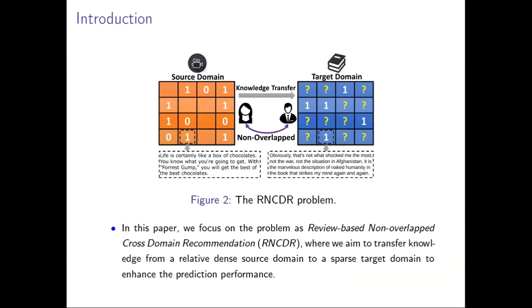The RNCDR problem is widely existed since the target domain is always suffering from the data-sparsity problem. Therefore, the target domain only has a small proportion of observed positive samples without negative ones. We summarize the main challenges as follows.